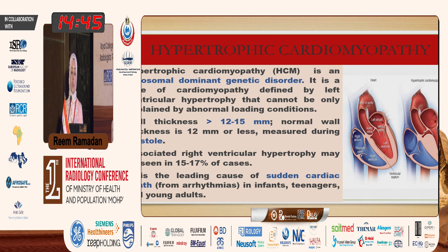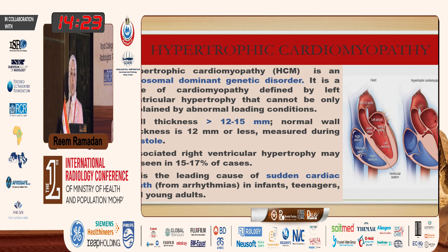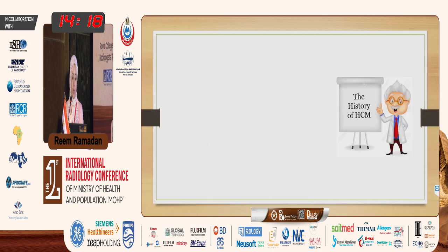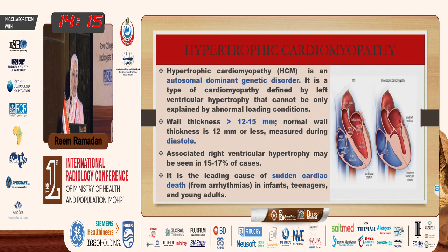HCM is an autosomal dominant genetic disorder. As we see in the diagram, comparing a normal individual's heart to a hypertrophic one, it is characterized by left ventricular hypertrophy that cannot be explained by other abnormal loading conditions. The wall thickness is greater than 15 millimeters — normal wall thickness is between 12 and 14 — measured during diastole. It is associated with right ventricular hypertrophy in 15 to 17 percent of cases.